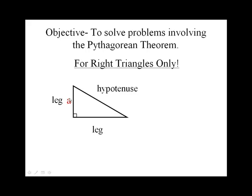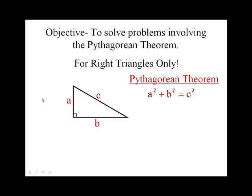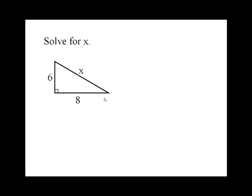In the Pythagorean Theorem we call this A, this B, and the hypotenuse C. Or we can switch those around, and this can be A, this can be B, and this can be C. It doesn't matter which leg you call A and B. So the Pythagorean Theorem is A squared plus B squared equals C squared. So this leg squared plus this leg squared equals the hypotenuse squared.